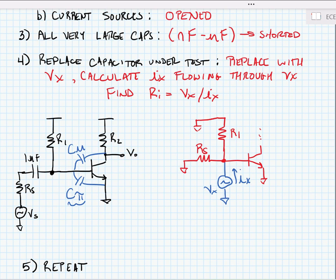Now we can find the resistance that the capacitor sees using a KCL analysis at the base node. Or we can look and see that from the perspective of this voltage source, all of the resistances are in parallel with it. So we can say R sub I is equal to R sub S in parallel with R sub 1 in parallel with R sub pi from the device.